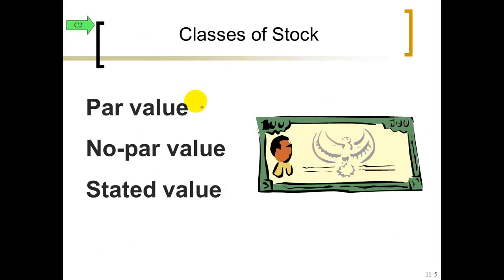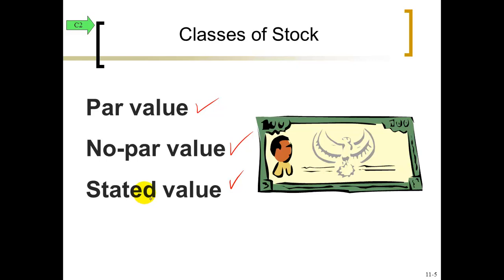Sometimes stock has no par value. In its place, no-par stock is probably going to be assigned a stated value amount, and that stated value is what goes inside the common stock account as the dollar amount. Sometimes there's no par and no stated value, so whatever money you receive when you sell the stock, all of it goes into the common stock account.